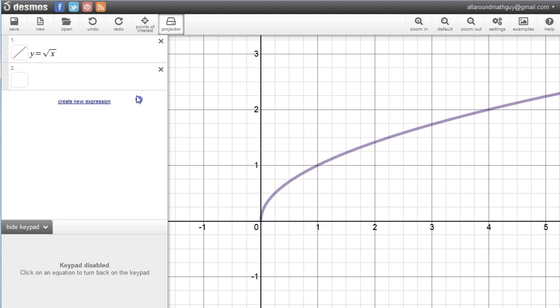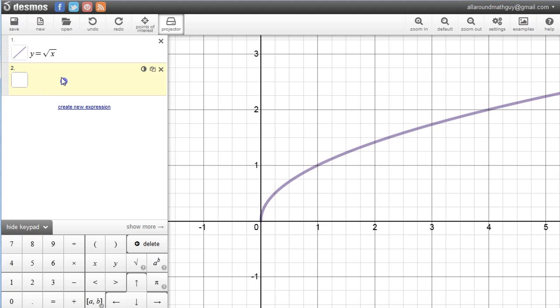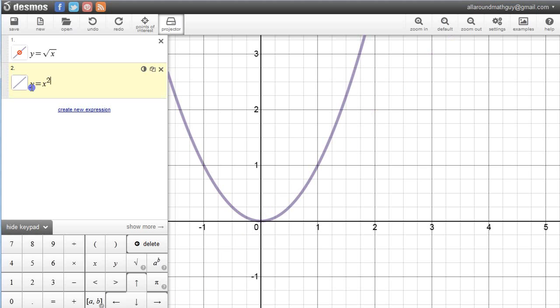Now, you might recognize that shape because you have probably in the past graphed something that is related to this. You've graphed Y equals X squared, all right? That graph Y equals X squared, that parabola, that has exactly the same shape. Now, let's make that green. Let's turn this one back on. It has the same shape, only this has two parts to it, and this only has one part to it.